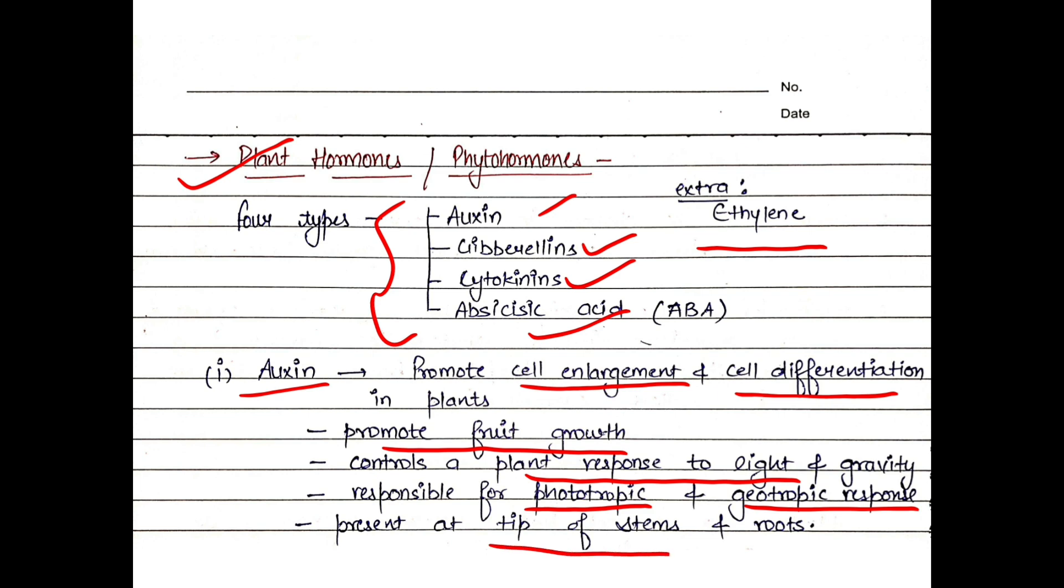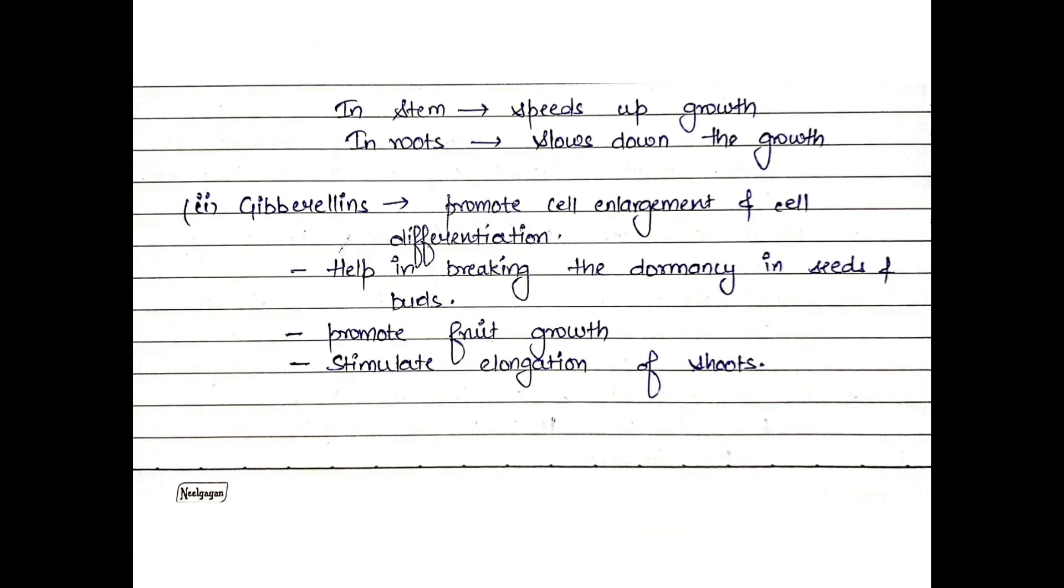Auxin is responsible for phototropic and geotropic response. It is present at the tip of stems and roots. In the stem, this speeds up growth because auxin is positive phototropic in stems. In the roots, auxin is negative phototropic, and here it slows down growth. So auxin inhibits root growth but promotes stem growth.